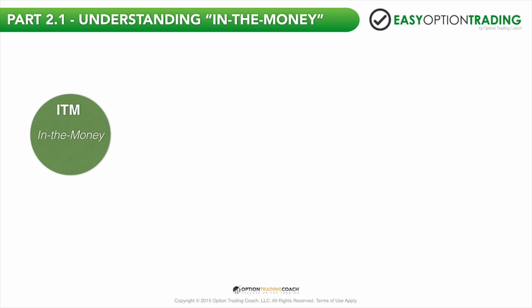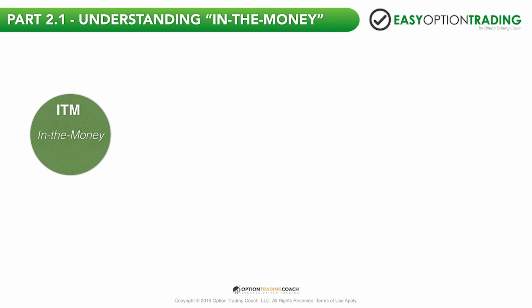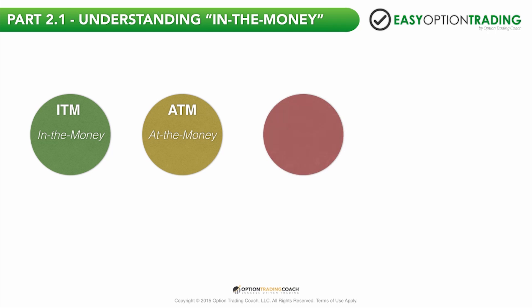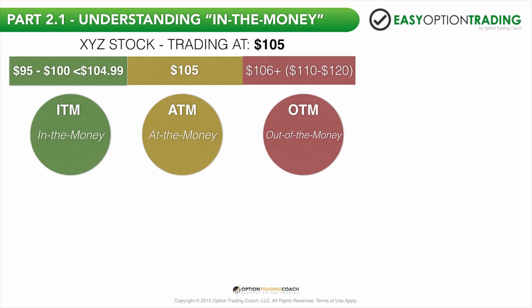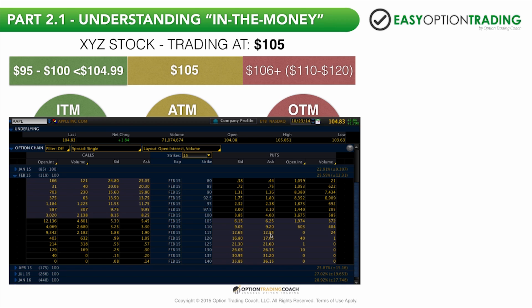Whenever you're trading options, whether it be a call or a put, they're going to fall in one of three different categories. The first term is ITM — the acronym for in the money. The next is ATM, at the money. And the third category is OTM, or out of the money. An in the money option is going to be below the strike price. At the money is the closest to the current trading price. And out of the money is anything above the current trade price. You make enormous returns when you buy inexpensive out of the money options and then they become in the money.